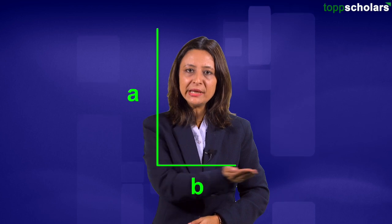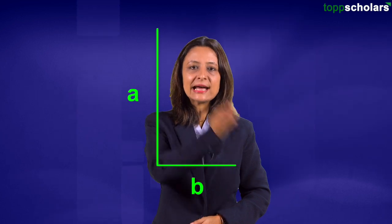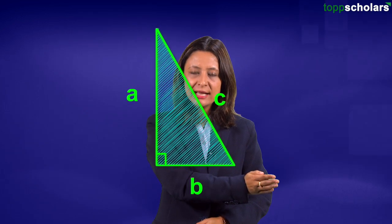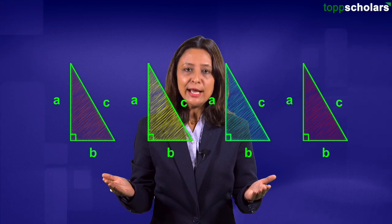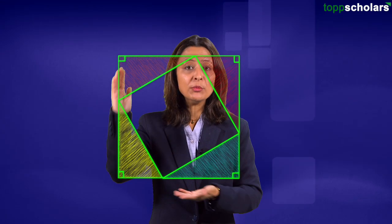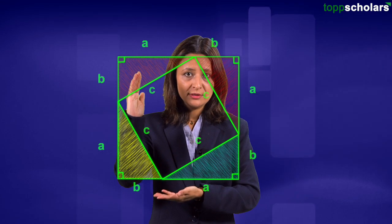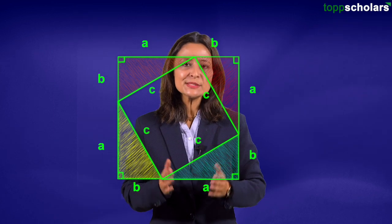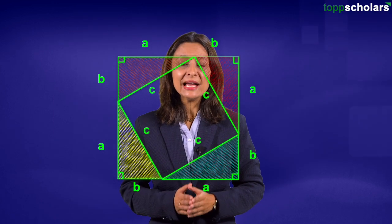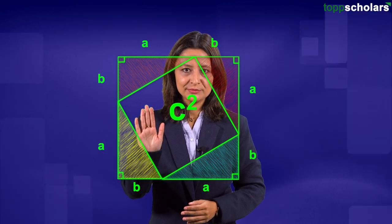So let's start with the first proof. Take a right angled triangle with perpendicular side A unit, B unit and hypotenuse C unit. Make four congruent copies of it. Rearrange these four triangles to form a square. Now observe, the empty space in between has the area C square.